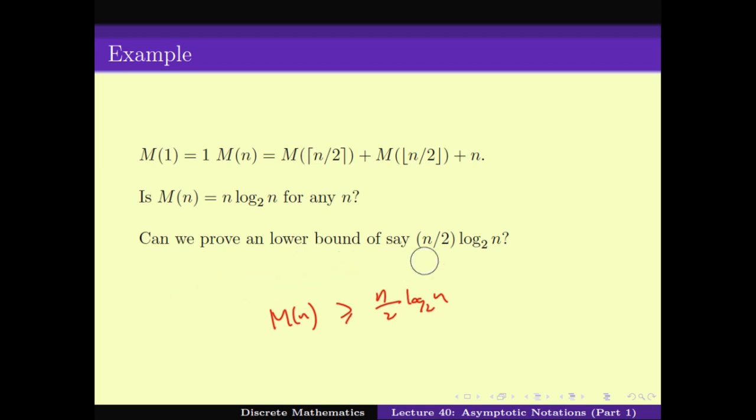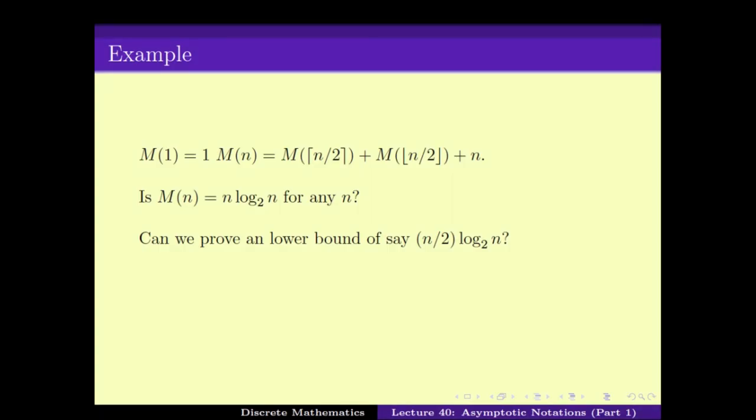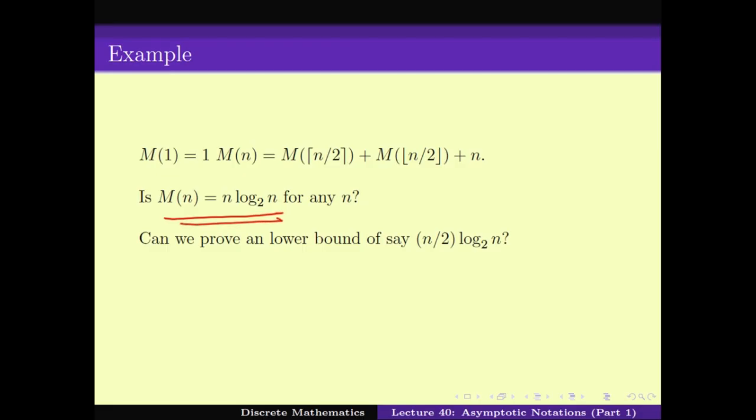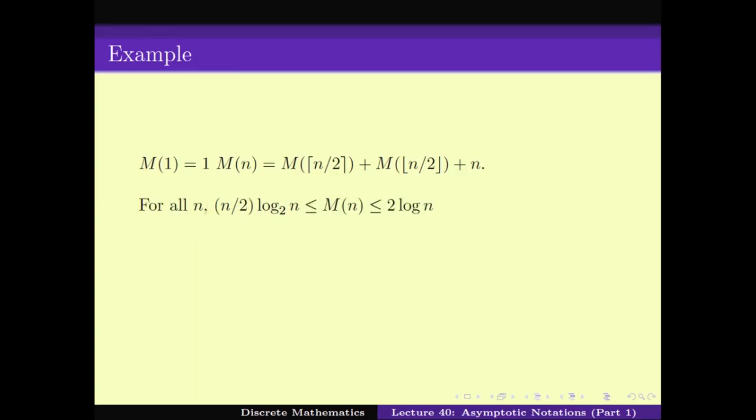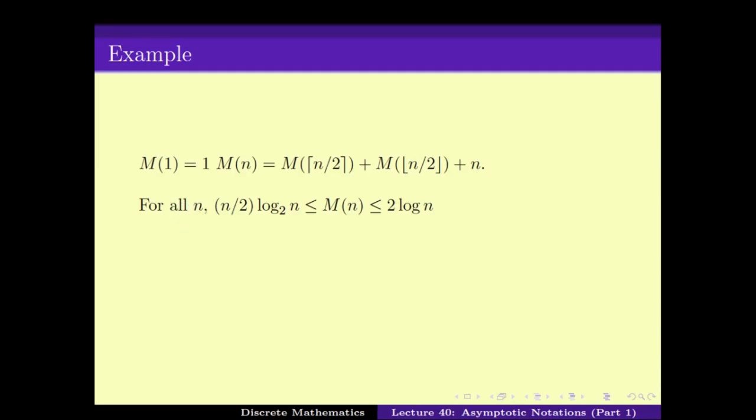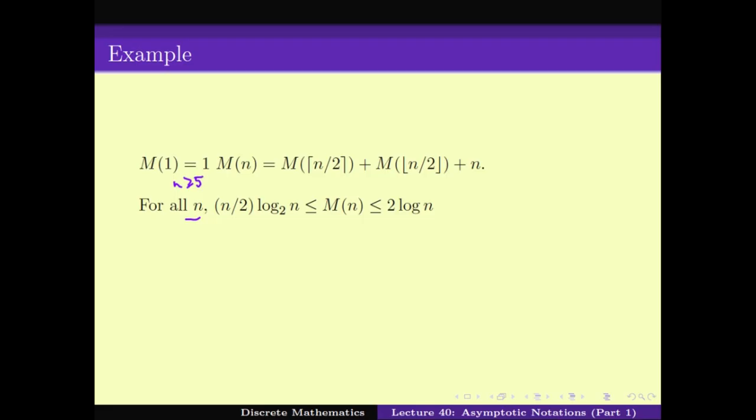So what we have? In fact, although we could not guess the actual value of M(n), we first guessed M(n) for some class of n, namely powers of 2. And then we could say that M(n) is lower bounded and upper bounded by two terms. It is upper bounded by 2n×log(n) and lower bounded by (n/2)×log(n) for all n ≥ 5. While we could not come up with the exact formula for M(n), we could come up with an inequality, upper bound and lower bound, where the difference between them is not too much. The upper bound is just 4 times the lower bound.